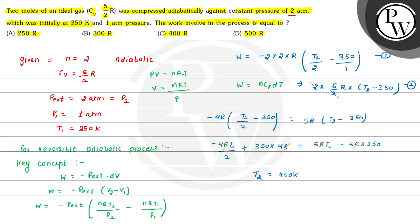Now we have the value of T2, so we can calculate work done W. W equals n·CV·ΔT, which is 2 multiplied by 5/2 R multiplied by (T2 minus T1). T2 is 450 K and T1 is 350 K — wait, T1 is 350 K but here it's noted as 300. Calculating, the work done comes out to be 500R.